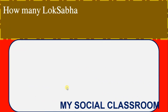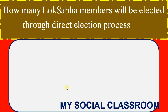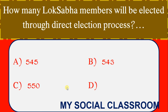How many Lok Sabha members will be elected through the direct election process? Options: 545, 543, 515, 560. Correct Answer: 543.